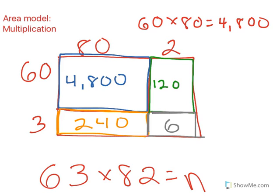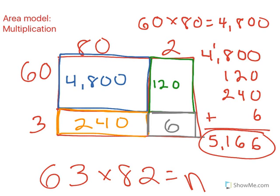Now that I have all of the partial areas, or the area of each part, I'm going to add them together to find the total area, which is also my product. 4,800 plus 120 plus 240 plus 6 equals 5,166. That means that 63 times 82 is 5,166. I know that that's probably correct, because it's pretty close to my estimated answer of 4,800.